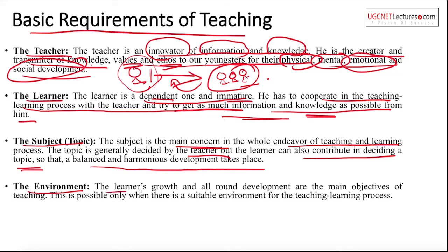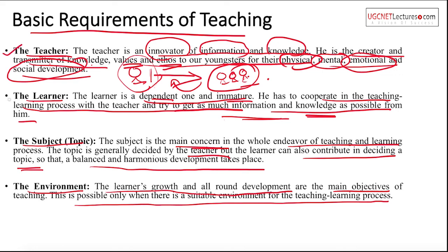Finally, environment is a key requirement. The learner's growth and all-round development is the main objective of teaching, and this is only possible when there is a suitable environment for the teaching-learning process. Along with the teacher, learner, and subject, environment is equally important. A healthy environment that is open for discussions and feedback creates a good possibility for development.